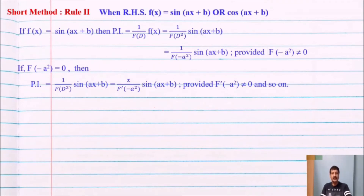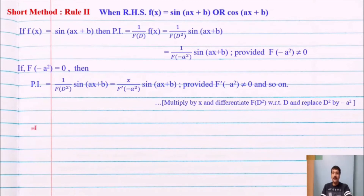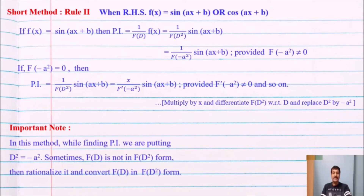If the denominator equals zero, i.e., f(−a²) = 0, then multiply by x, take the derivative of f(D²) with respect to D, and replace D² by −a², provided f'(−a²) ≠ 0, and so on. Important note: in this method we replace only D², not D. If f(D) is not in f(D²) form, rationalize it first.